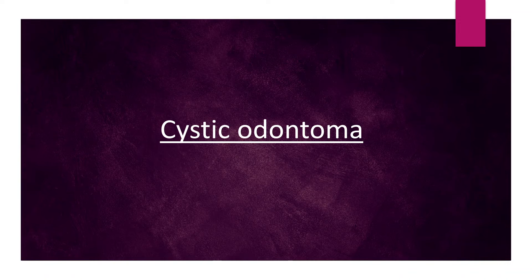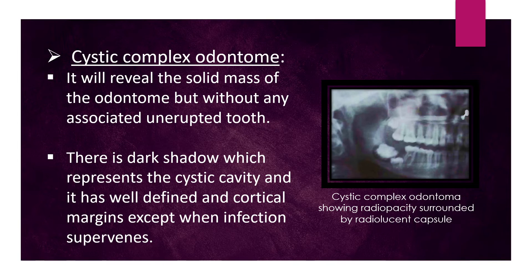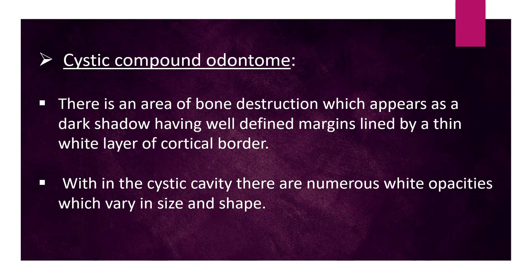Cystic odontoma — Cystic complex odontoma: It will reveal the solid mass of the odontoma but without any associated unerupted tooth. There is a dark shadow representing the cystic cavity with well-defined cortical margins, except when infection supervenes. Cystic compound odontoma: There is an area of bone destruction appearing as a dark shadow with well-defined margins lined by a thin white layer of cortical bone.